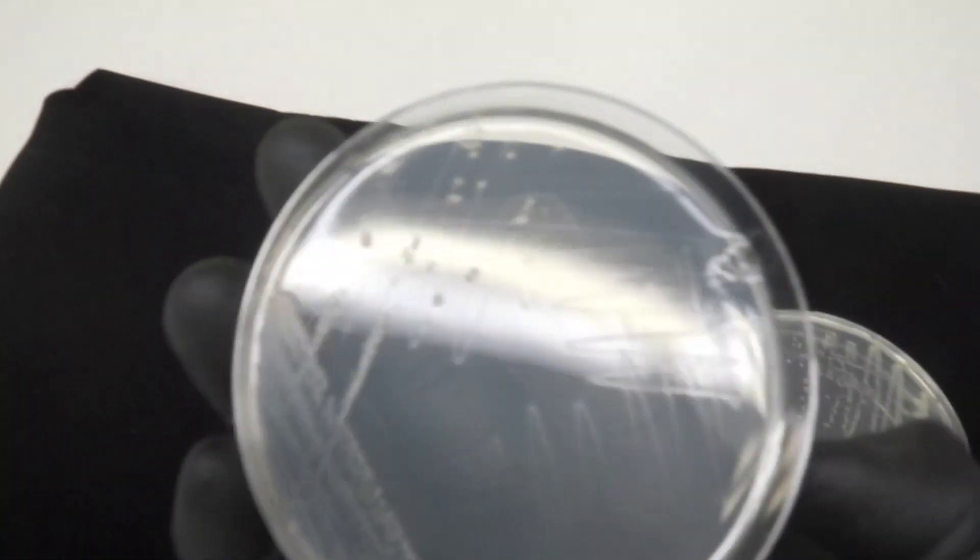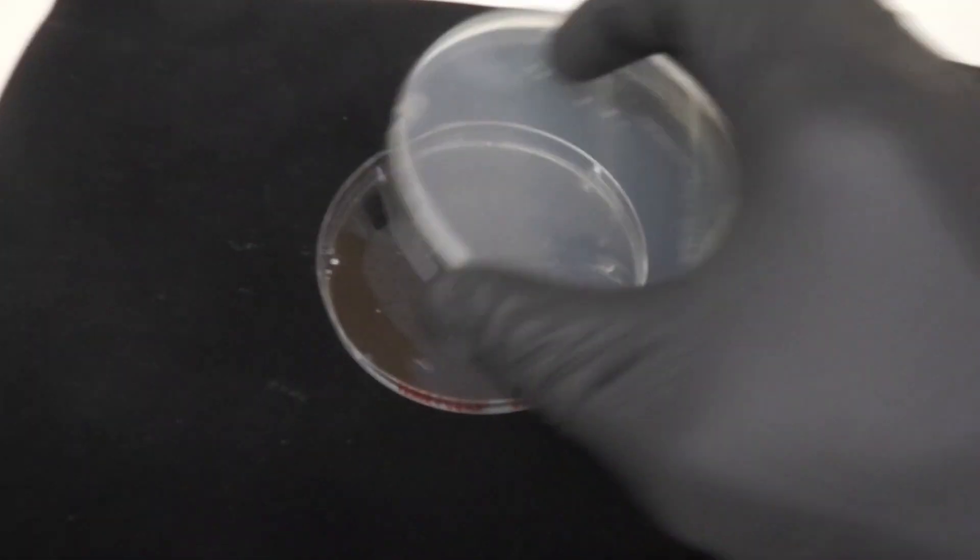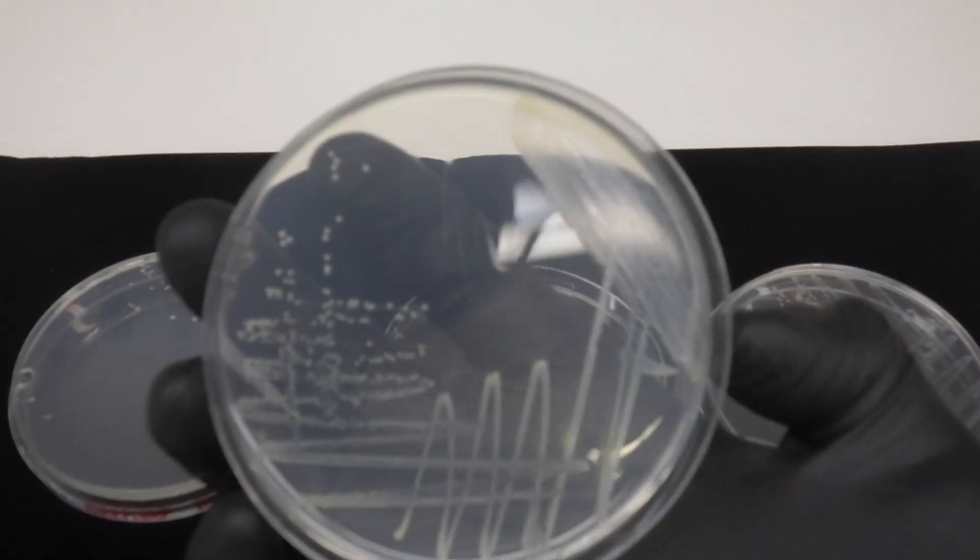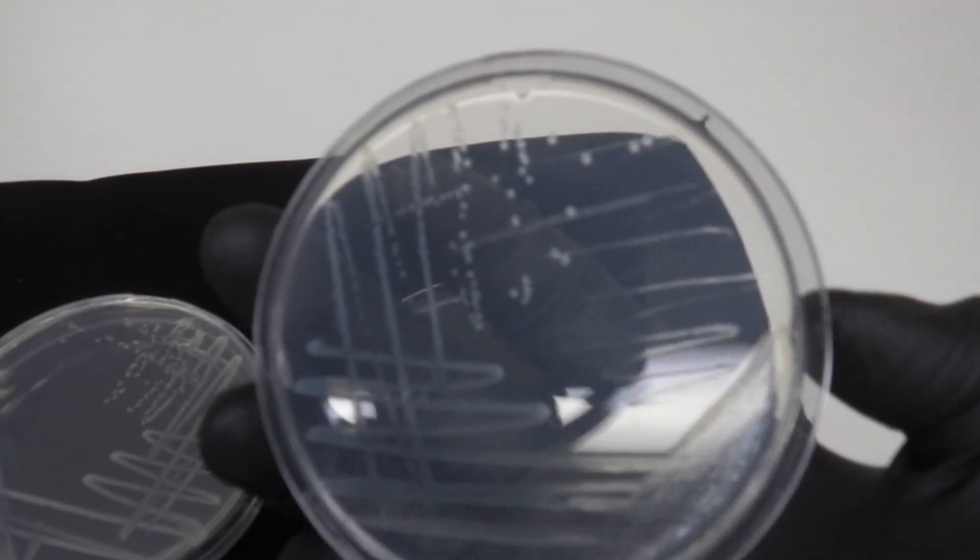On these three nutrient agar plates you can see colonies of Staph aureus and E. coli on the left, E. coli on its own in the center, and Staph aureus on its own on the right.